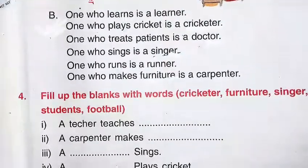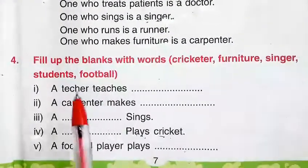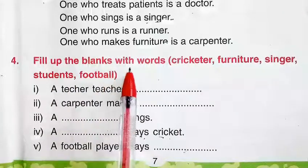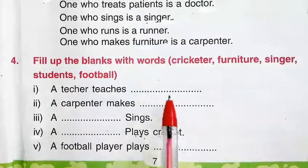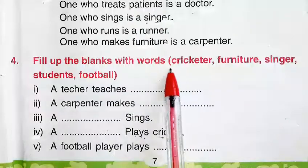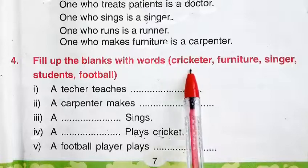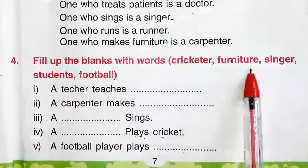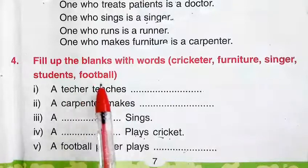Question number 4: fill up the blanks with the given words. The word options are: cricketer, furniture, singer, students, football.